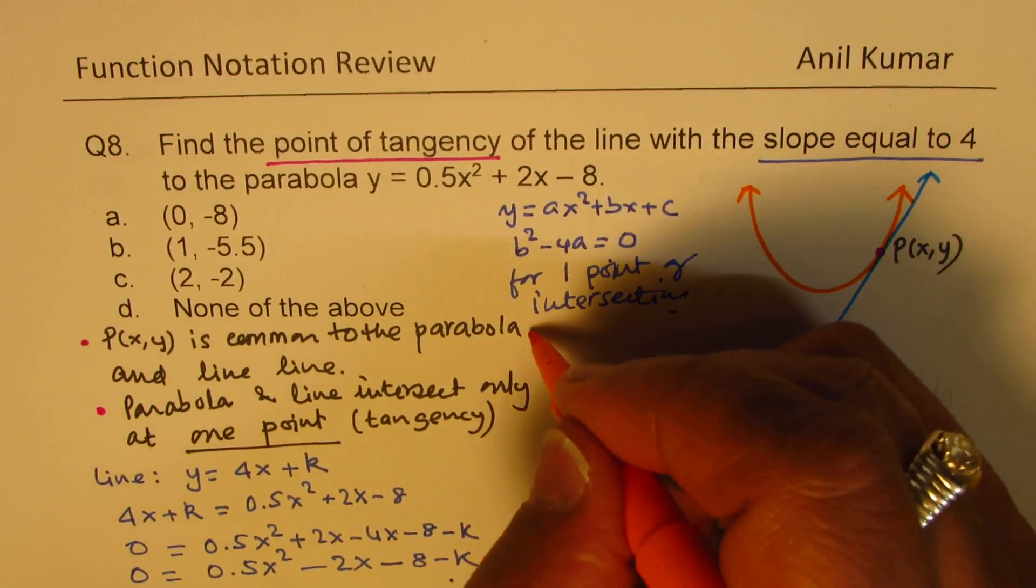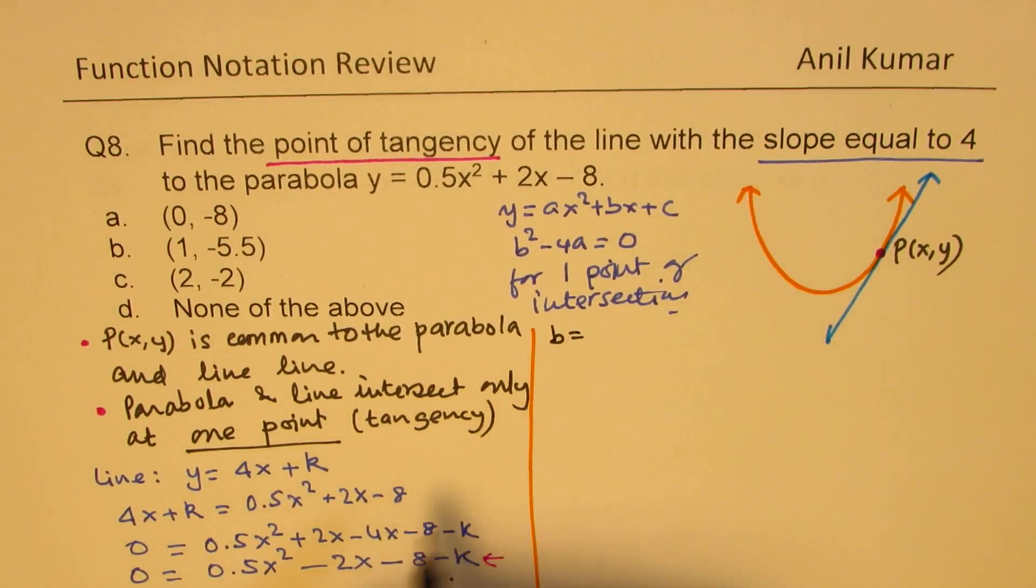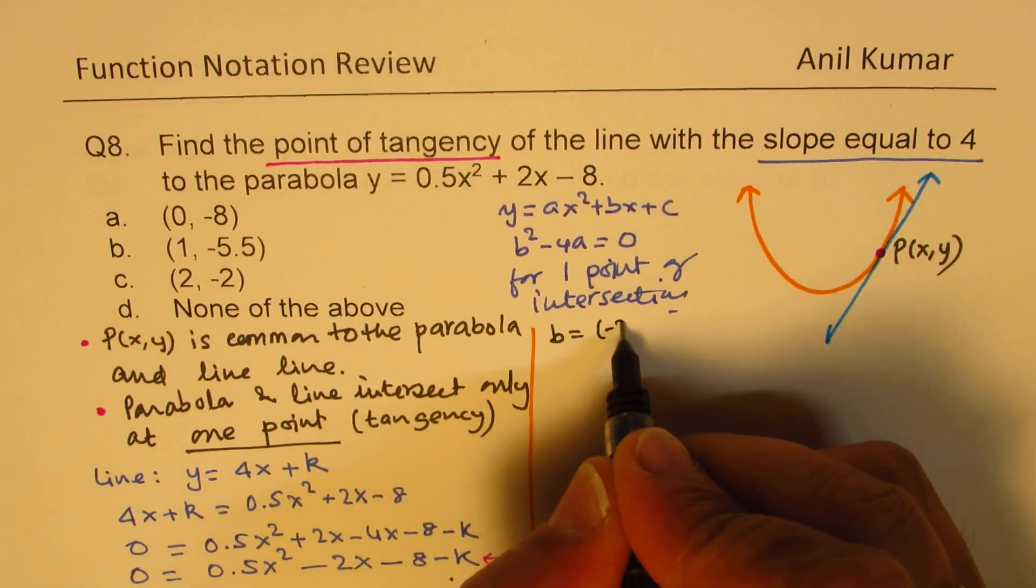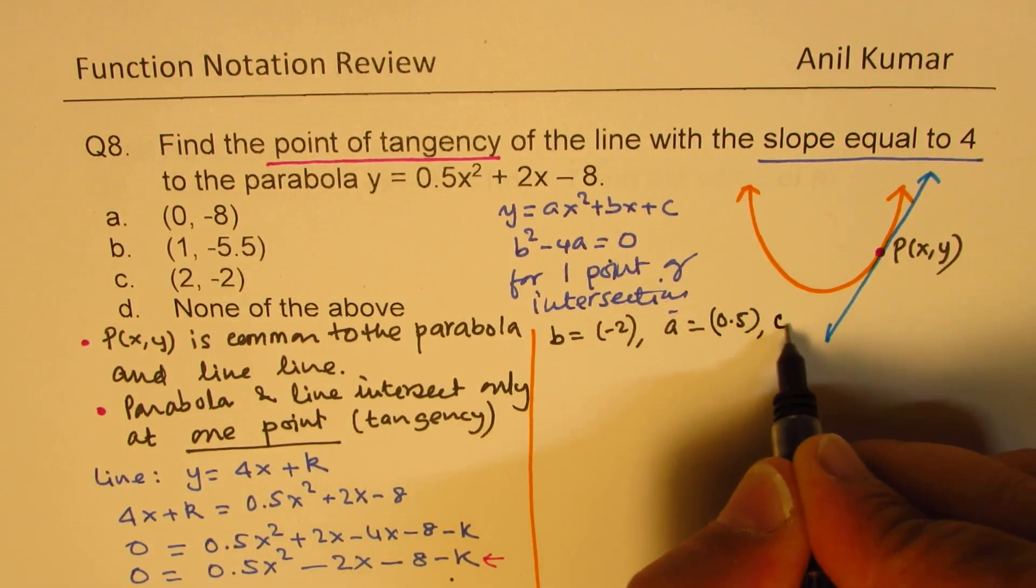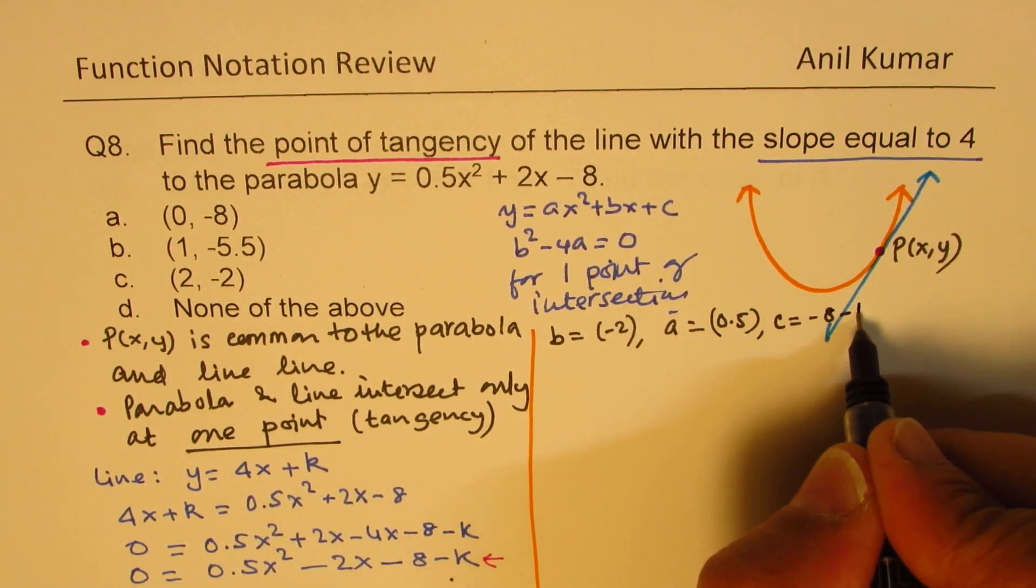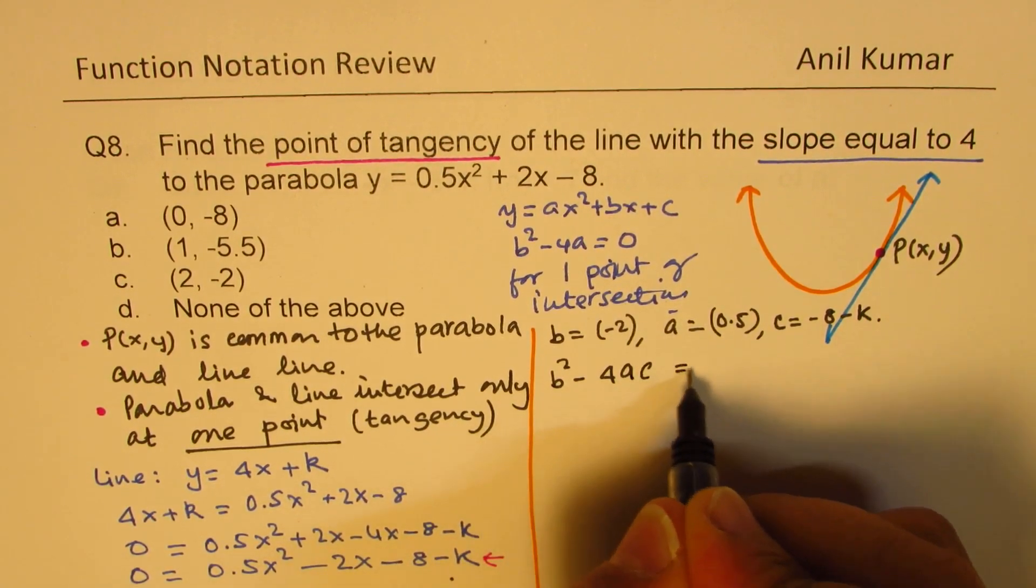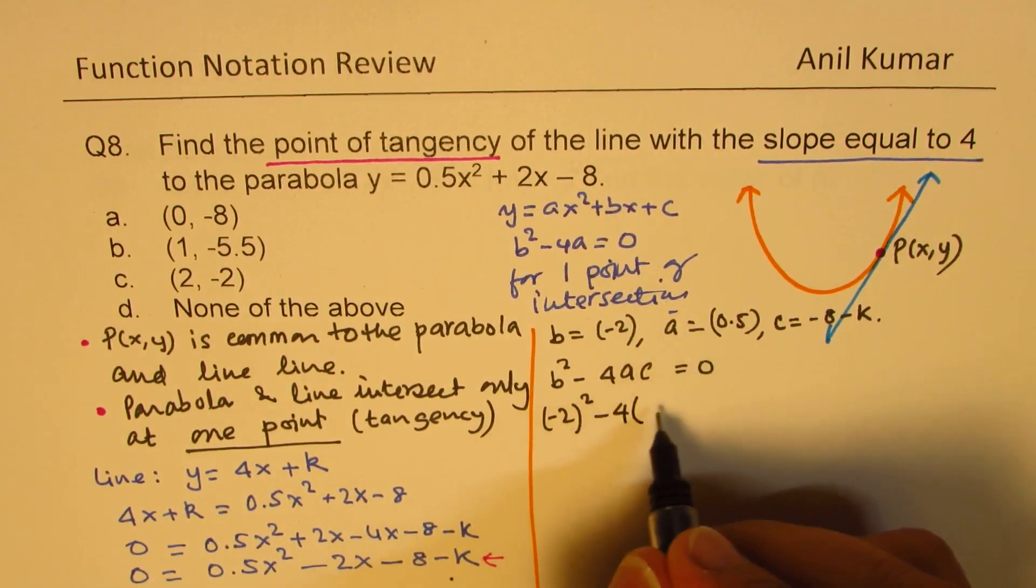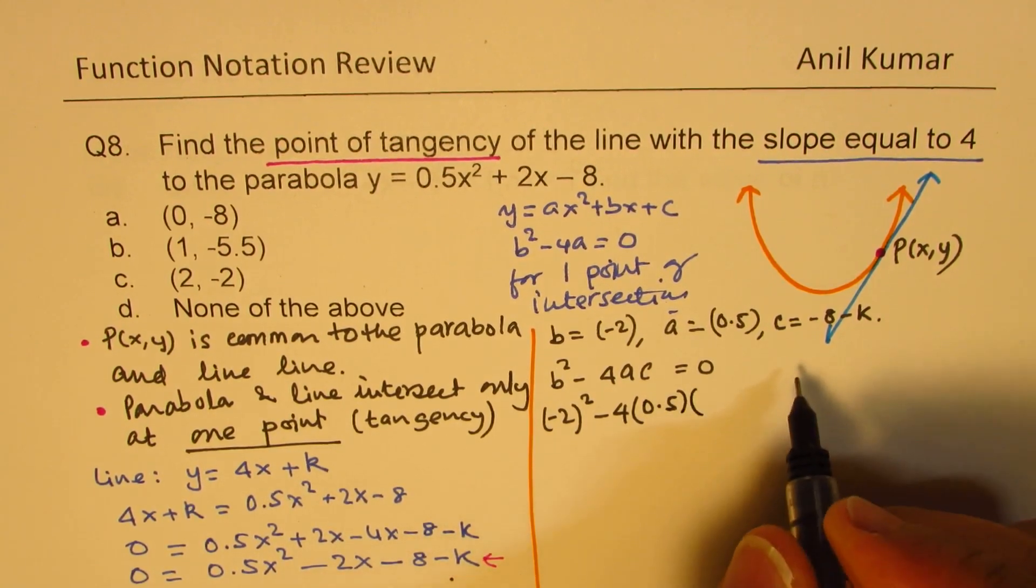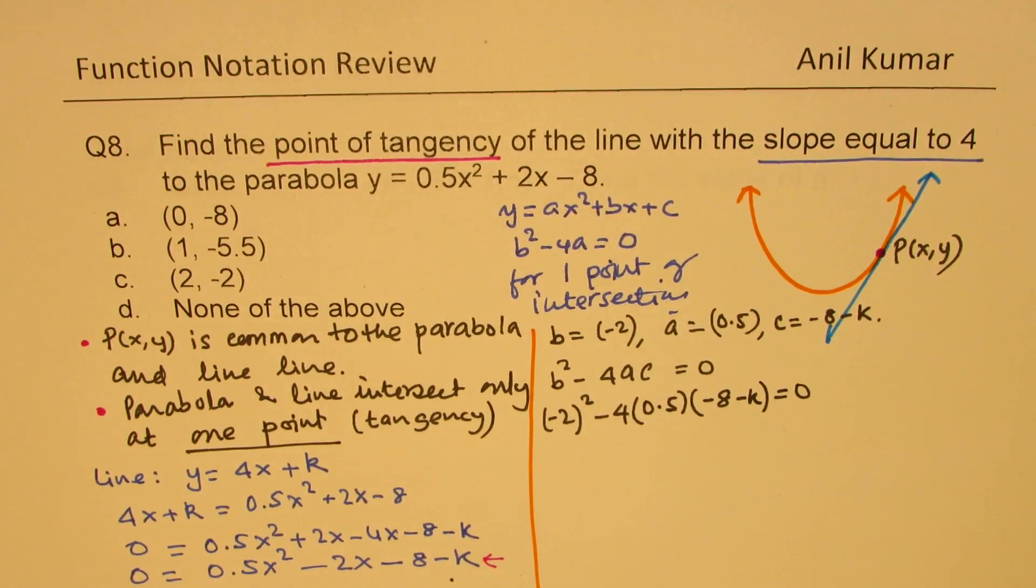So we'll use this particular concept to solve further. Now, b² - 4ac. In our case, b is -2, a is 0.5, and c is -8 - k. So b² - 4ac, which should be equal to 0, can now be written as (-2)² - 4(0.5)(-8 - k) = 0. Perfect.